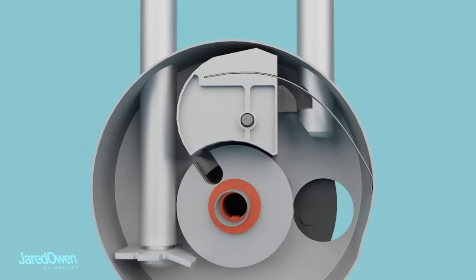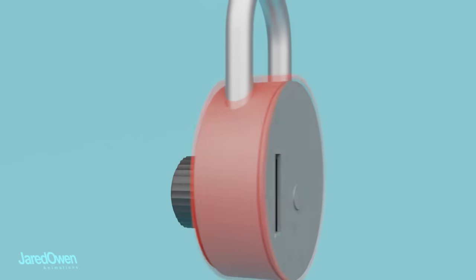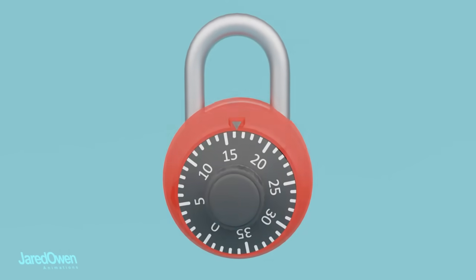When these three indentations are not lined up, the lever can't rotate, which means the shackle can't come out. So how do we line up the cams by only turning this dial? Let's look a little closer.